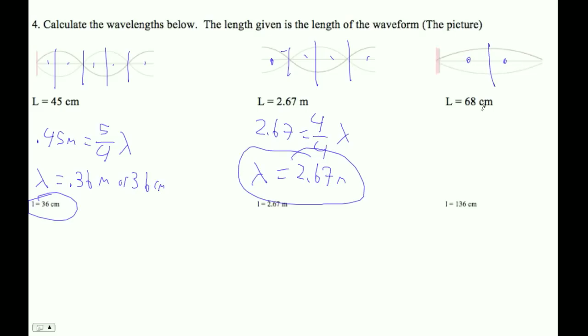And then this guy, the footballs, is two quarter wavelengths. So .68 meters is two quarter wavelengths, so the wavelength is four halves of that. Two times .68 is 1.36 meters or 136 centimeters. That's all that one's gonna be.